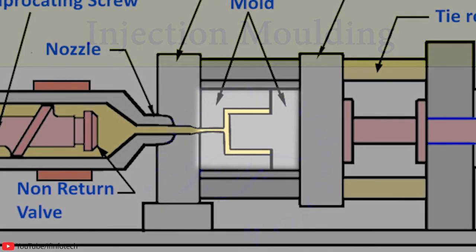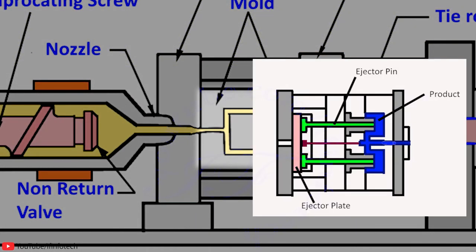Then the mold is opened after the cooling process, and the ejector rod pushes the ejector plate of the mold to further eject the moldings.